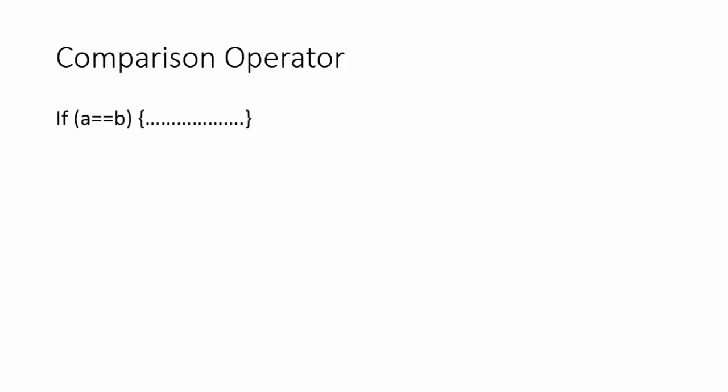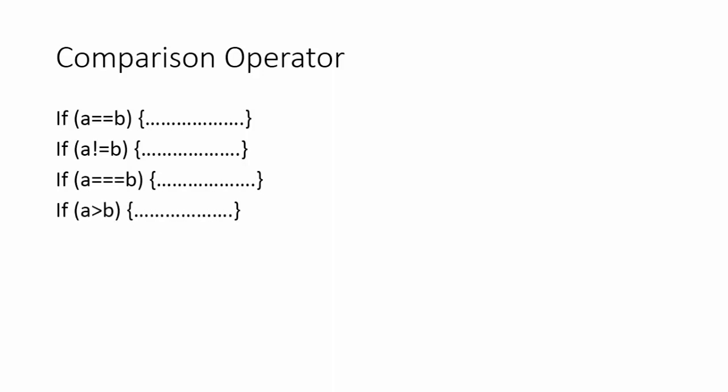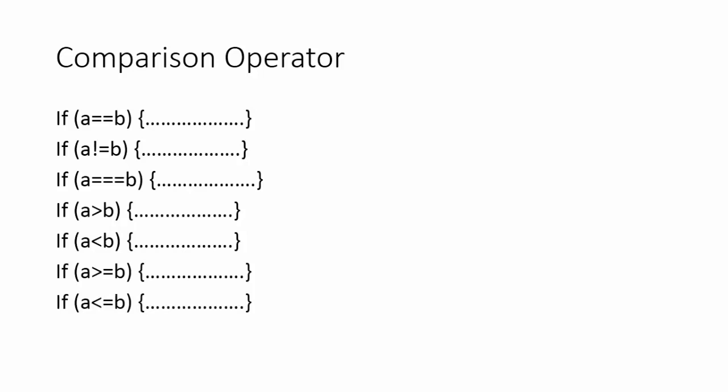Here are some comparison operators in a real environment. You can use the equality operator in your if condition. You can also use not equal in your if condition. You can use the strictly equal operator in your if condition when you need to make sure whether one thing is strictly equal to another. You can also use greater than, less than, greater than or equal to, and less than or equal to operators in your if condition.